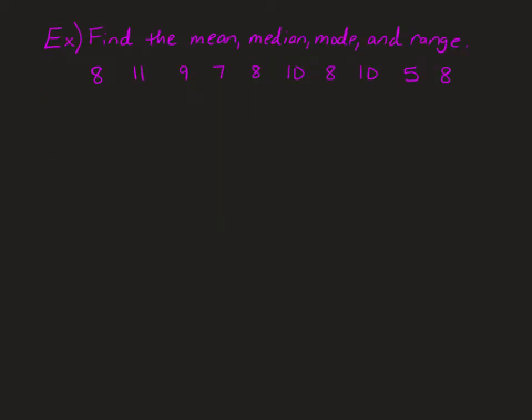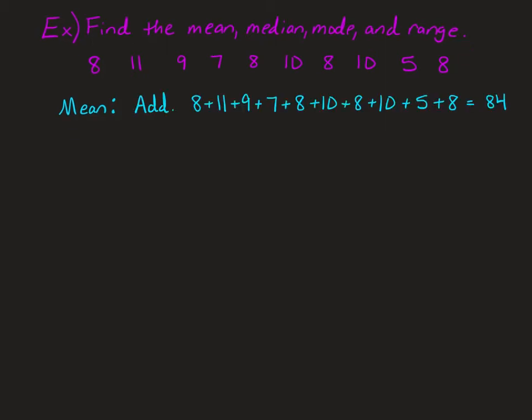Now for our example, we're going to find the mean, median, mode, and range given this set of data. So first we're going to find the mean. We begin by adding all the numbers, and we get 84.